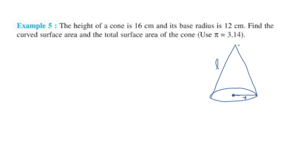Example 5: The height of a cone is 16 cm and its base radius is 12 cm. Find the curved surface area and the total surface area of the cone. We are showing the height of the cone and the radius is 12.